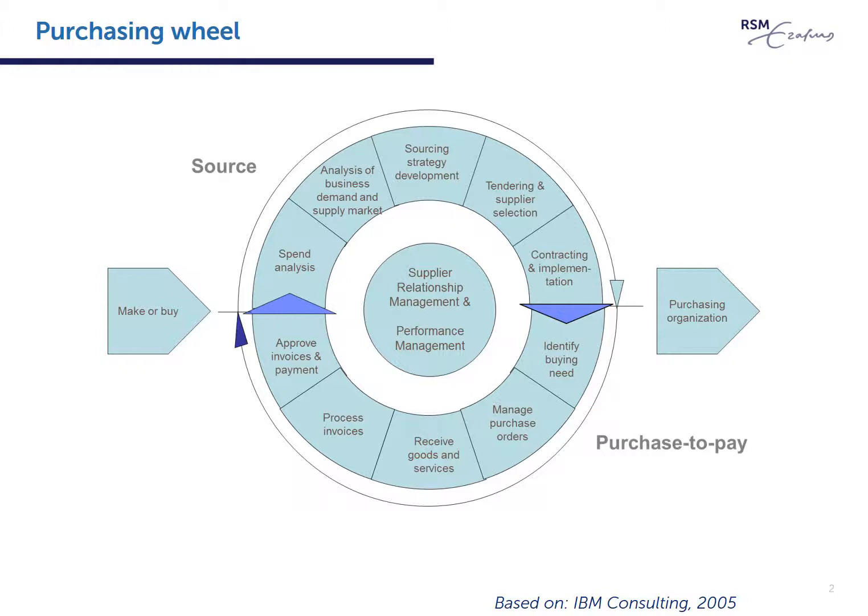In the PSM wheel, which we often use as a reference framework in structuring our teaching, contracting and implementation is the fifth process within the upper half of the wheel, the sourcing part. Contracting follows tendering and supplier selection, which we address in another e-lecture.